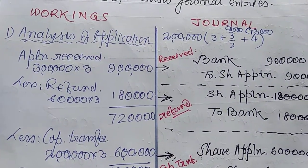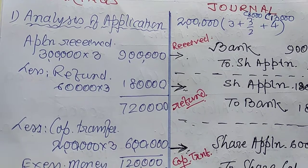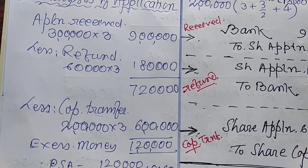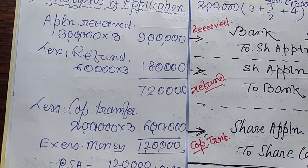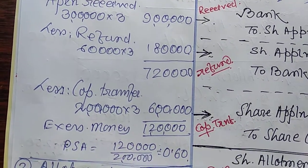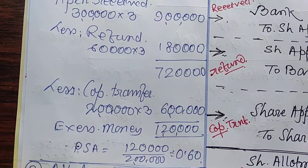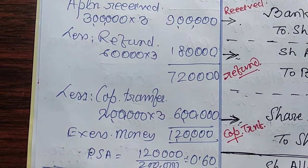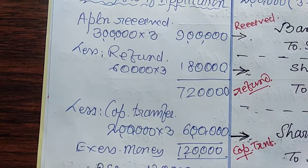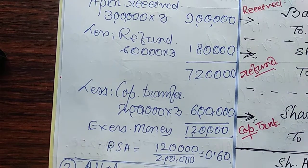Analysis of share application money: Applications received — 3 lakh shares into Rs. 3 = Rs. 9 lakh. Less refund Rs. 1,80,000. Remaining in hand: Rs. 7,20,000. Capital transfer is 2 lakh into Rs. 3 = Rs. 6 lakh. So excess money is Rs. 1,20,000. For 2 lakh shares the excess is Rs. 1,80,000, so per share it is Rs. 0.60. This is called PSA — per share adjustment — meaning a person allotted one share has paid Rs. 0.60 in advance to be adjusted with the allotment.